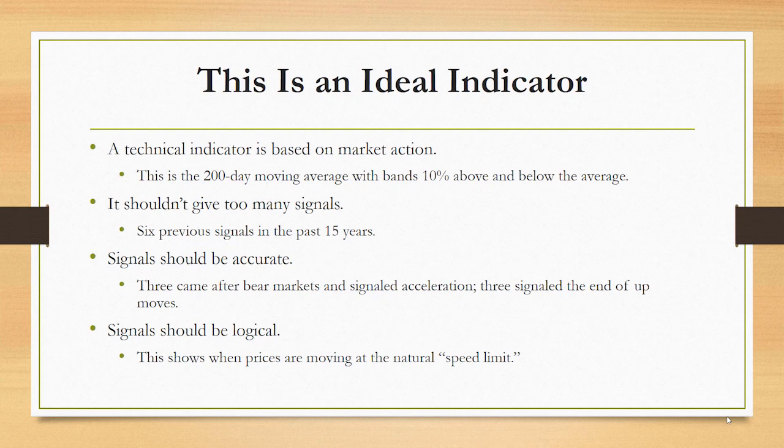This indicator basically shows the natural speed limit in the market. Imagine you're on a highway driving at a high rate of speed — eventually, if you're not paying attention and get a little too fast, one of two things has to happen: you either become hyper-focused and maintain that speed, or you need to slow down. Of course, an accident could also happen.